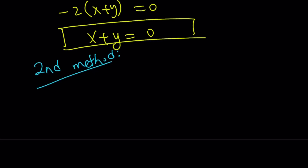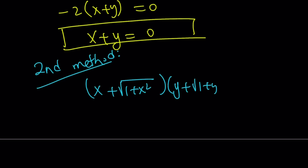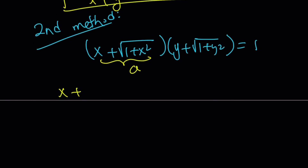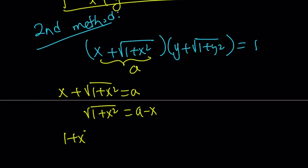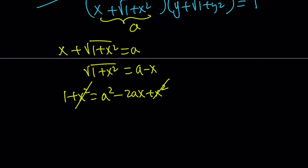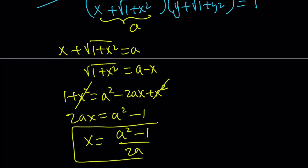The first method involved isolating one of the factors, doing it for both variables, then solving as a system — giving us x plus y equals 0. The second method is going to be different. Let's rewrite the original problem and use substitution, because substitution is powerful. Let's call x plus the square root of 1 plus x squared equal to A. We can isolate the radical and square both sides — x squared cancels out, giving us 2Ax equals A squared minus 1, so x equals (A squared minus 1) over 2A. We got the value of x in terms of A.